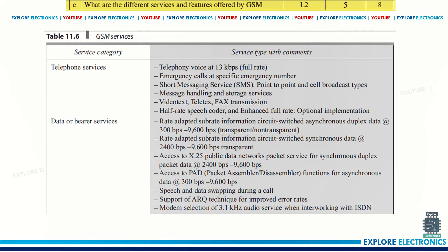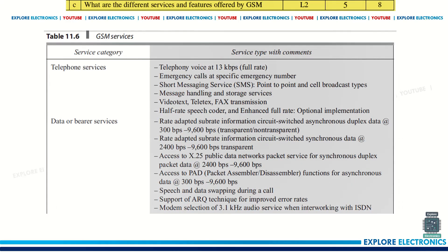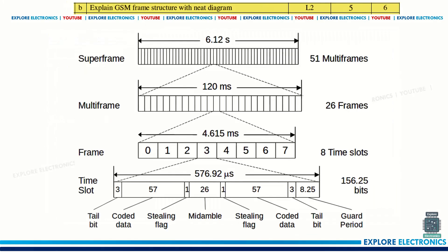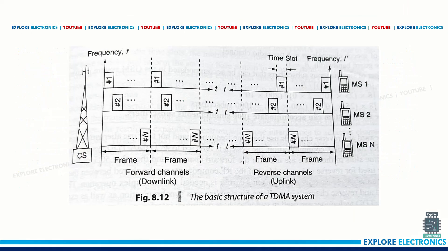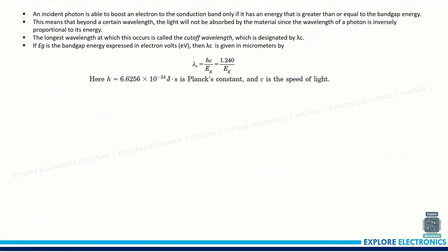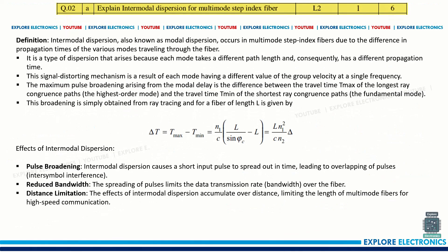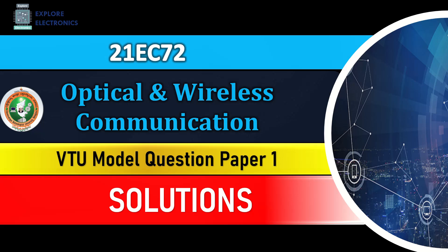What are the different services and features offered by GSM? Telephone services, data services, and SMS services are the services GSM provides in the cellular system — that question is for eight marks. These are the answers for the model question paper. I have added brief explanations here; please go through the book for complete understanding. Since it is a theory subject, write your answers elaborately in the examination to get complete marks. This is the OWC model question paper one solution. Thank you.